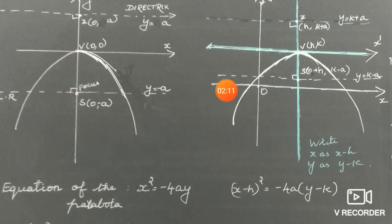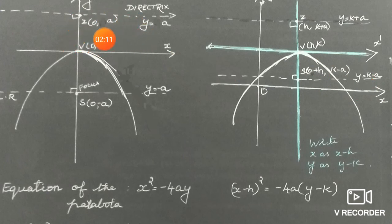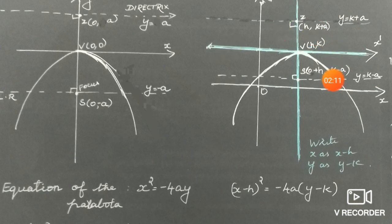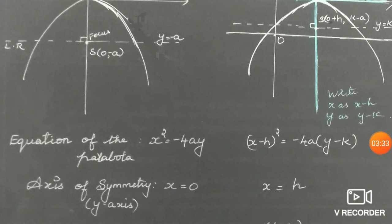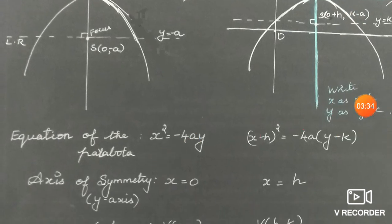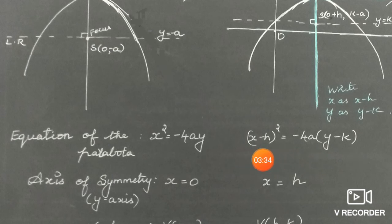The directrix line is y equal to k minus a. The focus coordinate is (h, k minus a) — wait, we add h and k to the standard values. So the directrix is y equal to k plus a, and the focus is at (h, k minus a). Now in the equation of the parabola, we replace x with x minus h and y with y minus k.